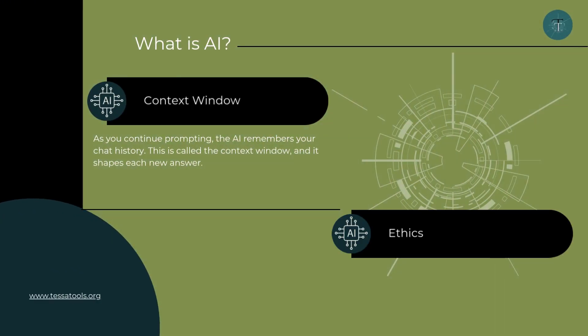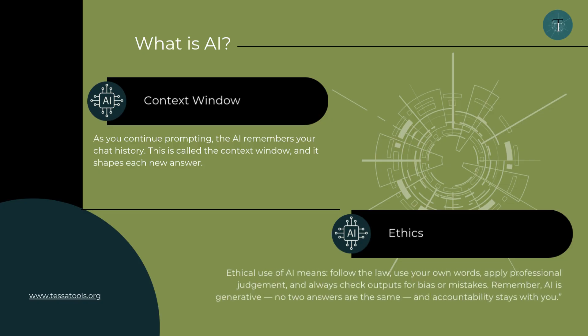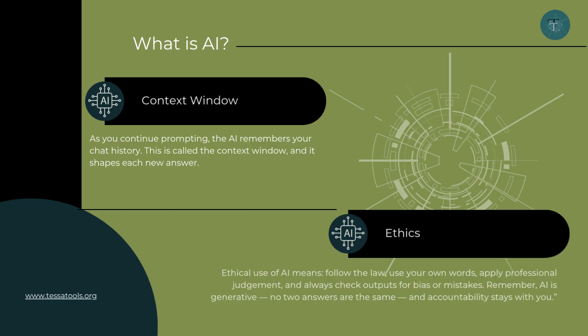As we continue a conversation with AI, it remembers the history of our prompts. This is called the context window, and it means each new answer is shaped by what came before. Alongside that, we must think about ethics. Ethical use means following the law, always using your own words, checking outputs for bias or mistakes, and remembering that accountability rests with us. AI can support practice, but it should never replace professional judgment.